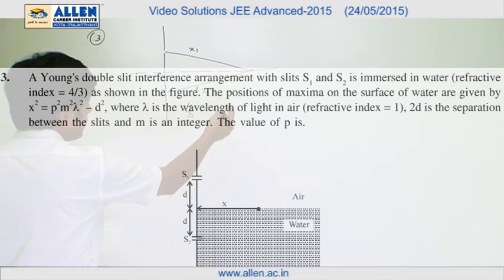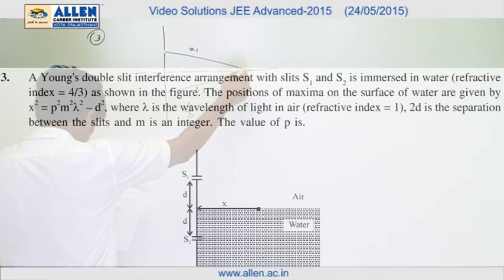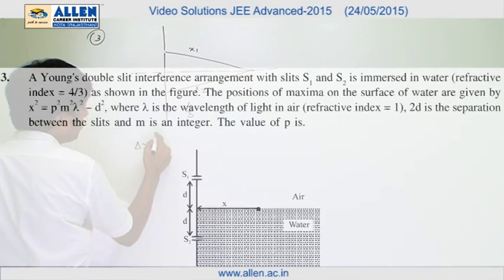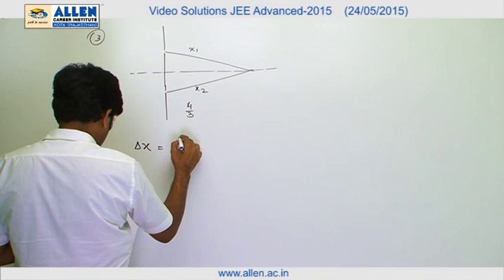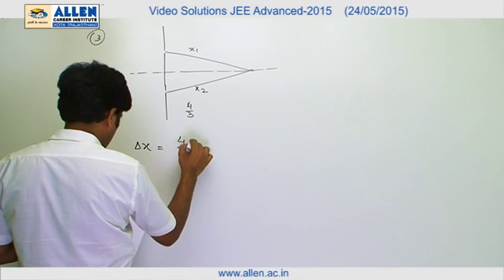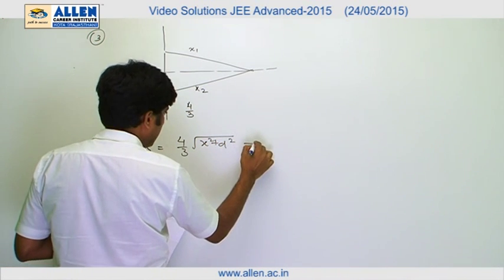In this question, condition of maxima has been asked. At this point we can say the optical path difference between these two waves will be given by 4 by 3 root over x square plus d square minus x square plus d square.